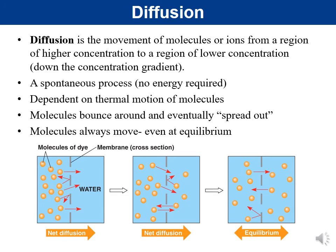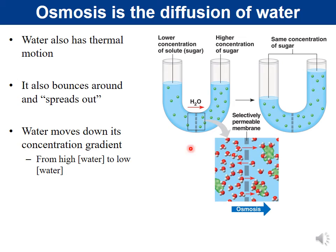Water also has thermal motion and will move down the concentration gradient — from high water concentration to low water concentration. To understand this, we need to review water. Water, H₂O, is an oxygen covalently bound to two hydrogens. Water is polar because oxygen and hydrogen don't share electrons equally due to electronegativity differences.